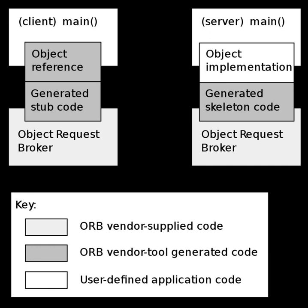CORBA's notion of location transparency has been criticized — that objects residing in the same address space and accessible with a simple function call are treated the same as objects residing elsewhere, in different processes on the same machine or different machines. This is considered a fundamental design flaw, as it makes all object access as complex as the most complex case, i.e., a remote network call with a wide class of failures not possible in local calls. It also hides the inescapable differences between the two classes, making it impossible for applications to select an appropriate use strategy.